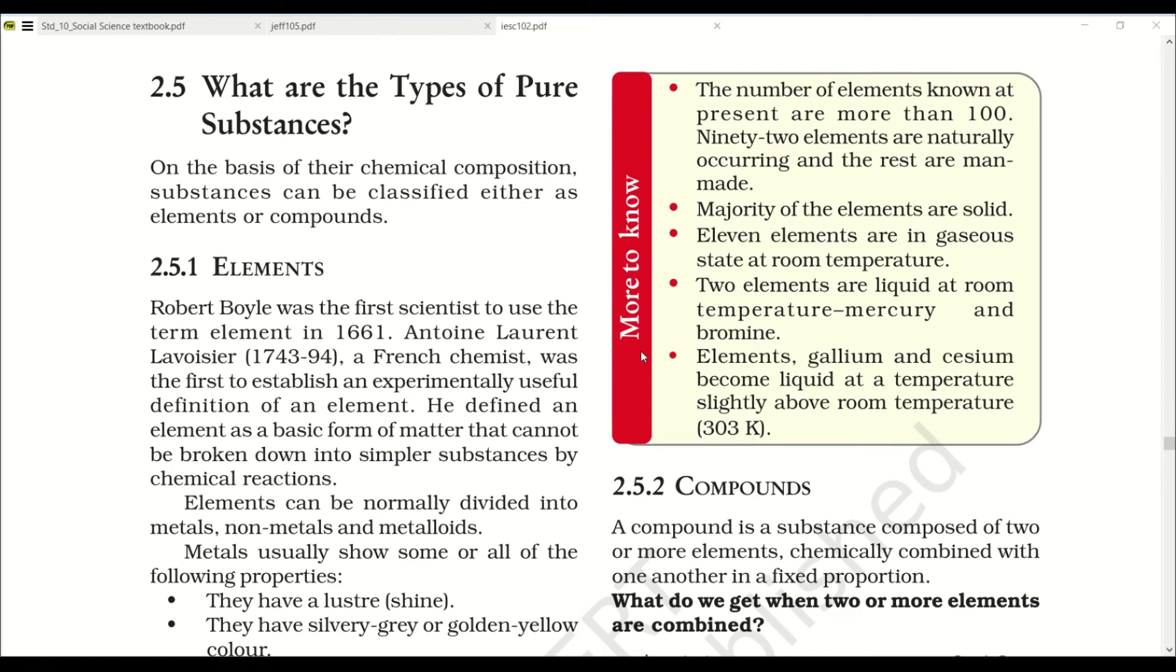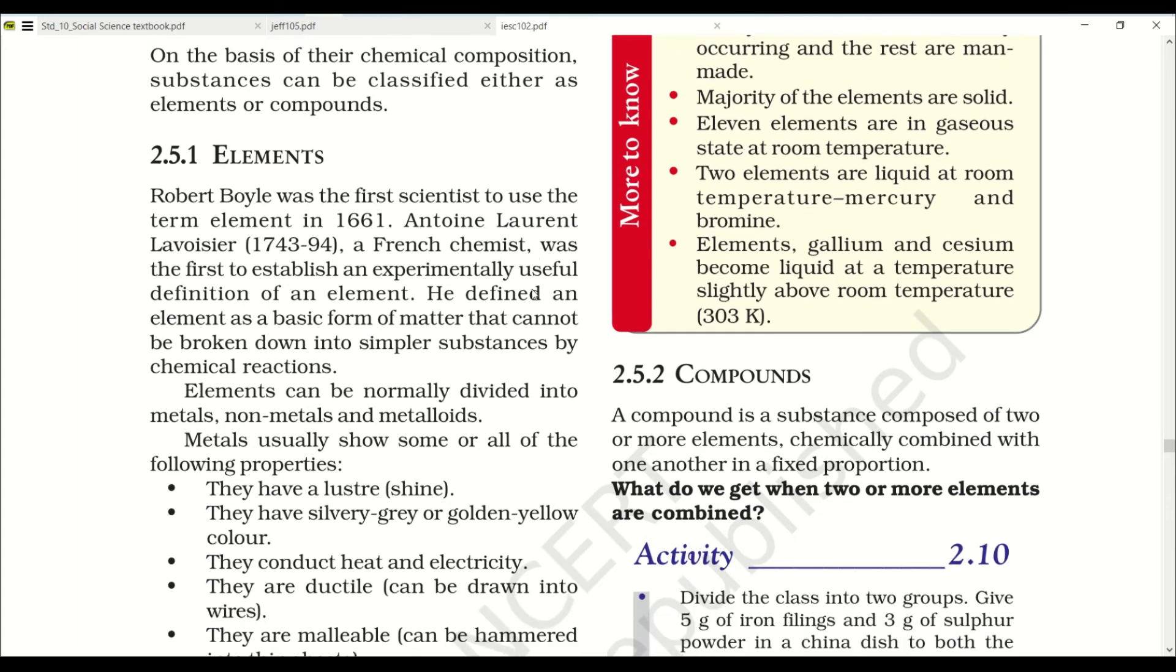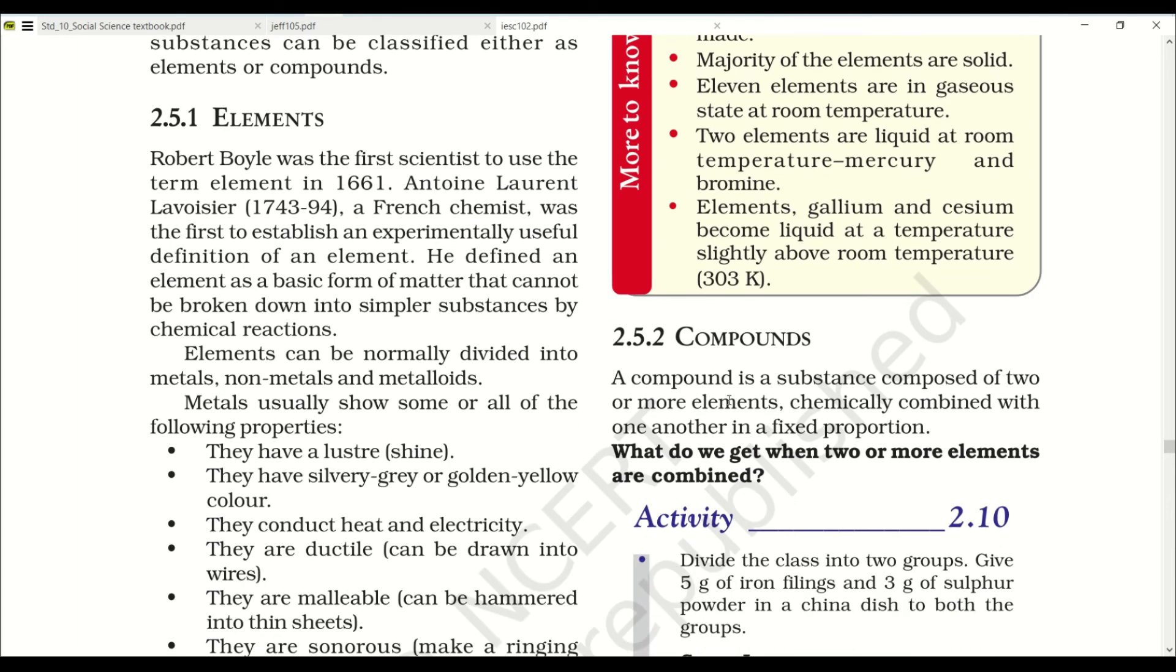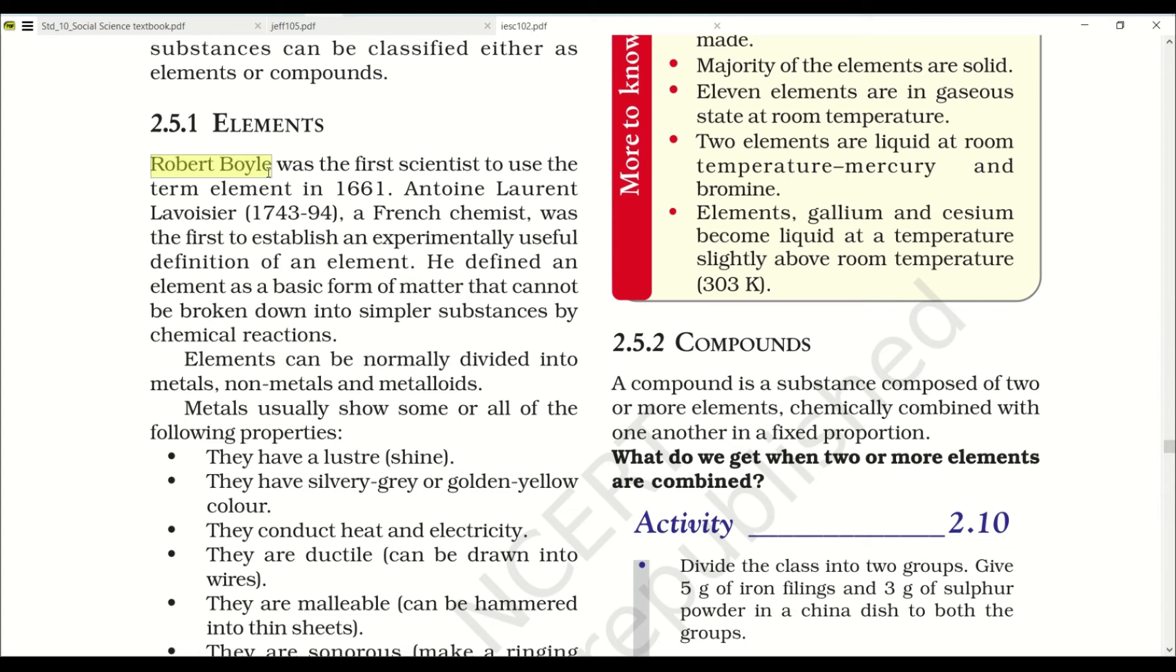Now let's go through the types of pure substances. As you have studied, mixtures are of two types: homogeneous and heterogeneous. Pure substances are also of two types: elements and compounds. Robert Boyle was the first scientist to use the term element in 1661. Anton Laurent Lavoisier, a French chemist, was the first to establish an experimentally useful definition of an element. He defined an element as a basic form of matter that cannot be broken down into simpler substances by chemical reactions.